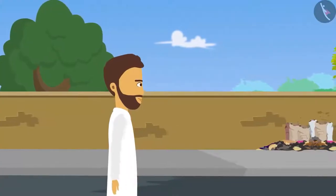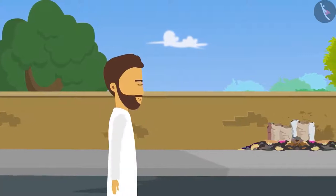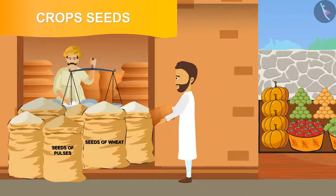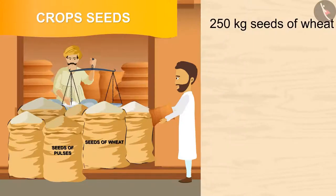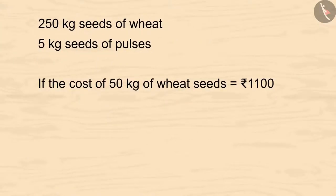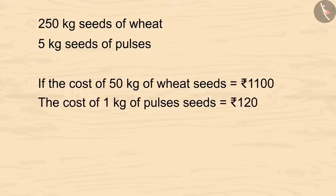Today, Karim Bhai is very happy and is going to buy some seeds of wheat and pulses. He bought 250 kgs of seeds of wheat and 5 kg seeds of pulses. If the cost of 50 kg of wheat seeds is Rs. 1100, and the cost of 1 kg of pulses seeds is Rs. 120, so how much money did Karim Bhai spend on pulses seeds?